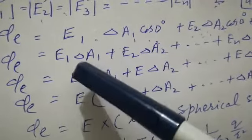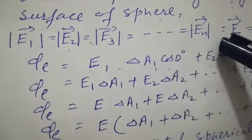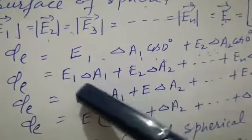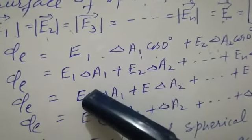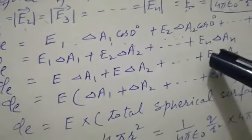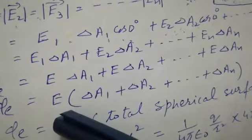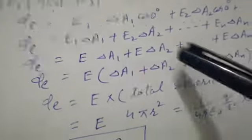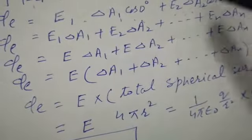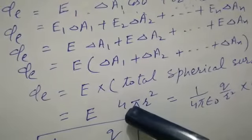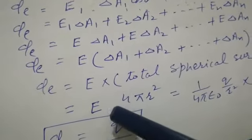We can factor out the common E, removing the subscripts since E is the same magnitude everywhere on the sphere. This gives: Φ_E = E·(ΔA1 + ΔA2 + ... + ΔAn). The sum of all small patches is the total area of the spherical surface, which equals 4πr². So the total flux through the closed spherical surface is E multiplied by 4πr².